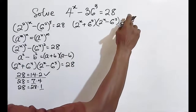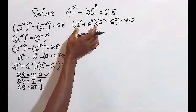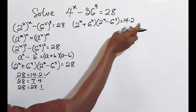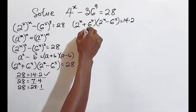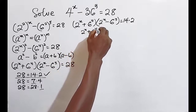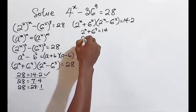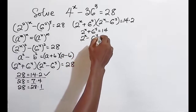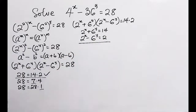If this is true, the sum gives us 14 and the difference gives us 2. So we can set up two equations: 2^x + 6^y = 14 (equation 1), and 2^x − 6^y = 2 (equation 2). We can now add these two equations together to eliminate the 6^y term.